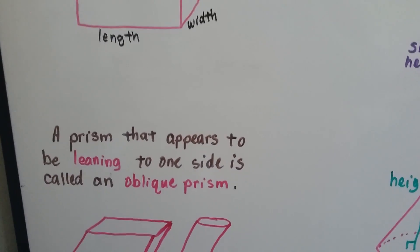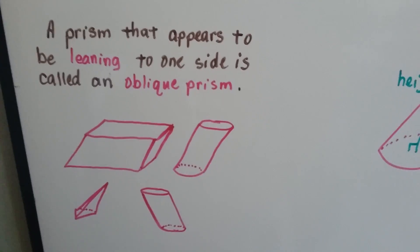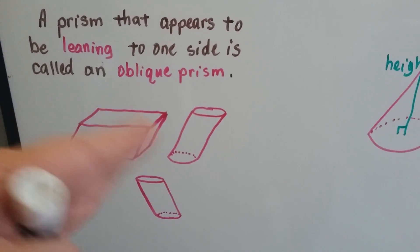A prism that appears to be leaning to one side is called an oblique prism. It's kind of like the Tower of Pisa, just kind of leaning.